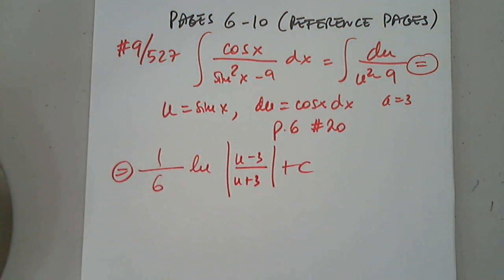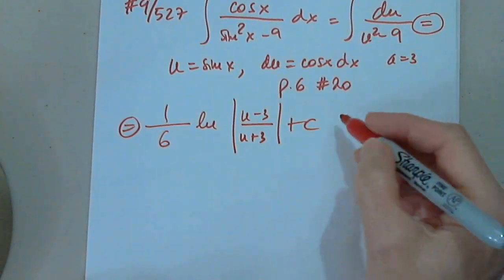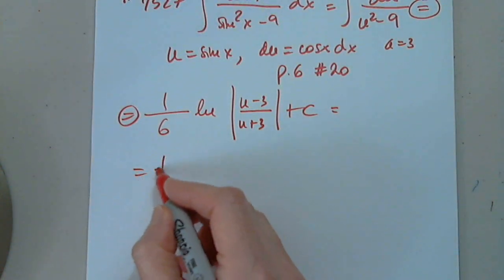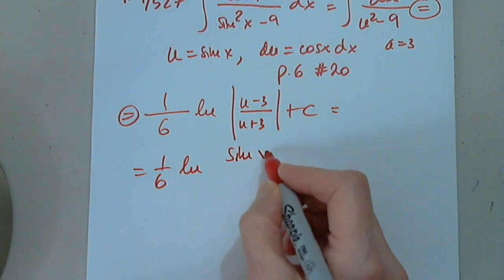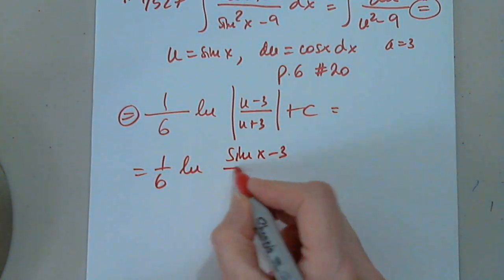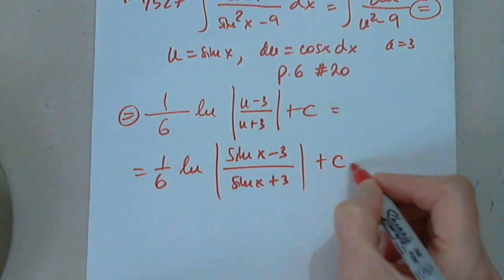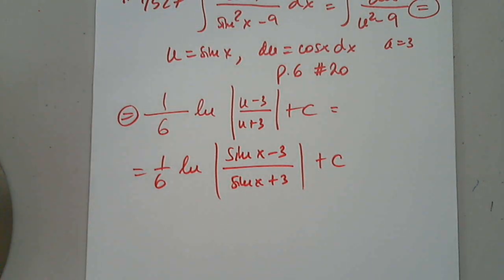We have to go back to the substitution, where u = sin(x). So the final answer is (1/6) ln |( sin(x) − 3) / (sin(x) + 3)| + C. Hopefully that one is clear. Let's look at another one.